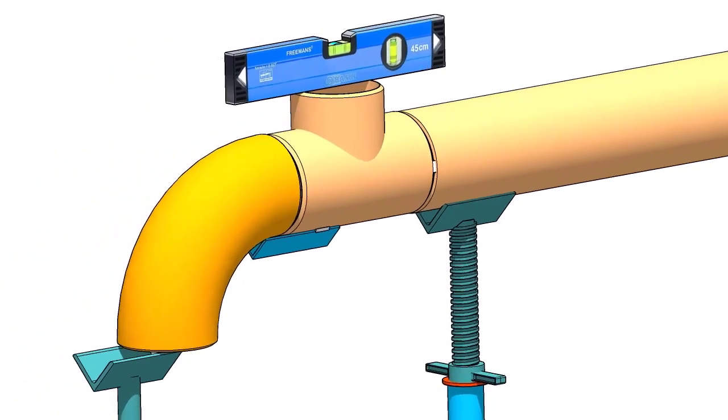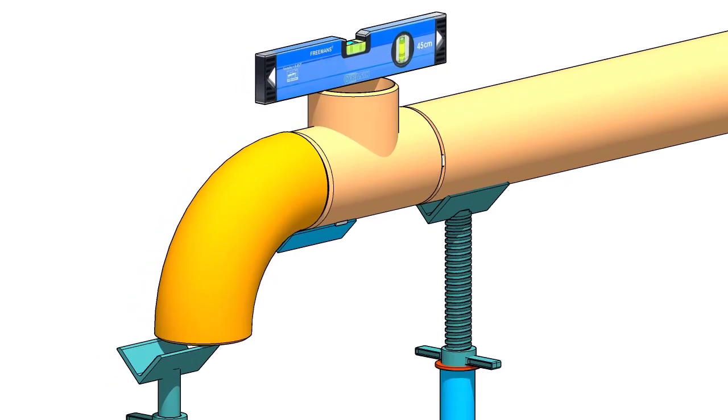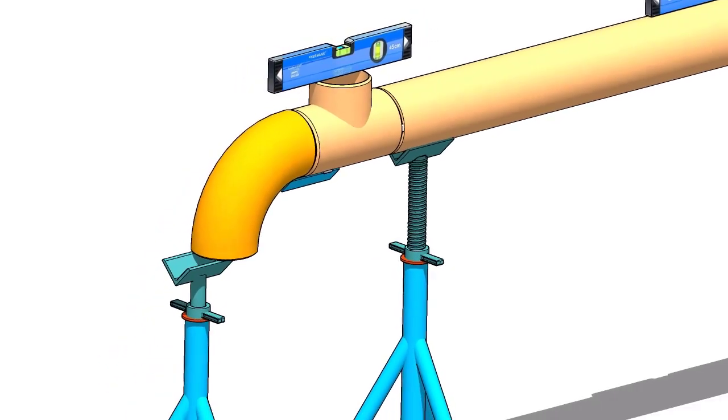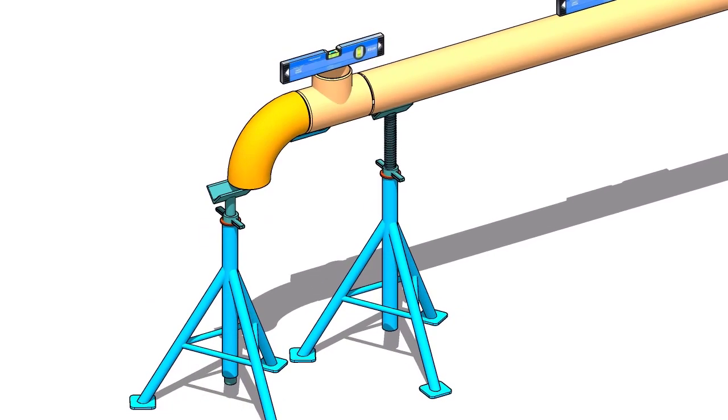Put the elbow on the angle cleat. Provide proper support at the lower face of the elbow, otherwise it will fall down. Put the gap rod between the joint.